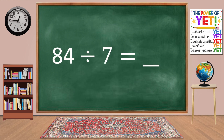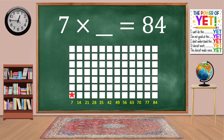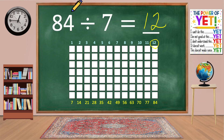84 divided by 7 equals blank. Our related fact is 7 times what equals 84? Skip count: 7, 14, 21, 28, 35, 42, 49, 56, 63, 70, 77, 84. We have twelve columns. 7 times 12 equals 84. 84 divided by 7 equals 12.